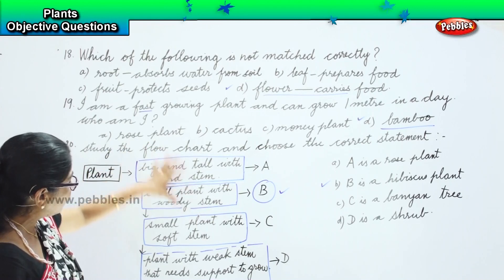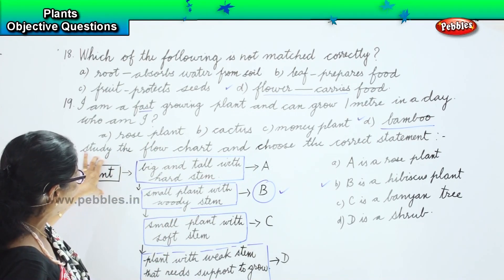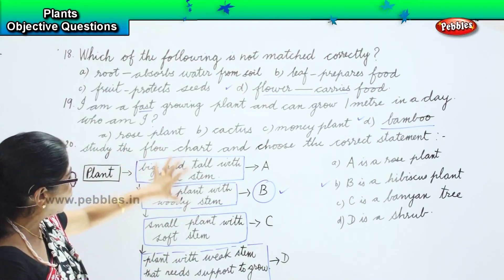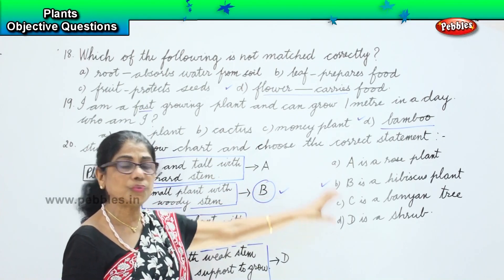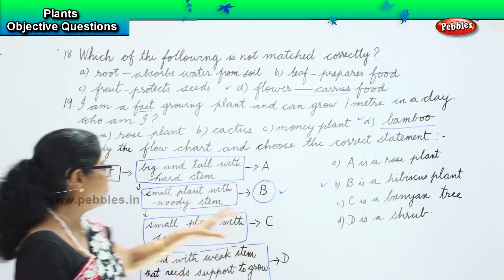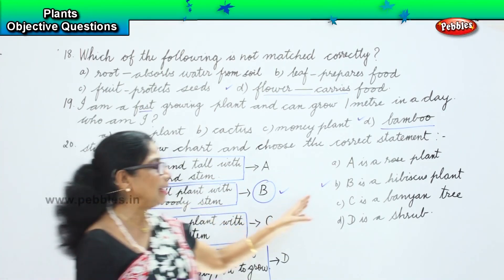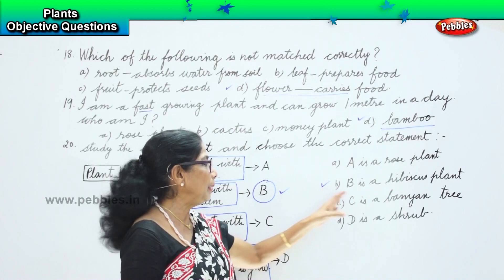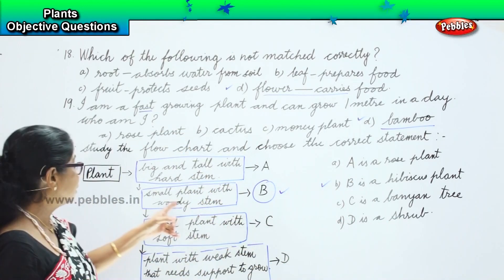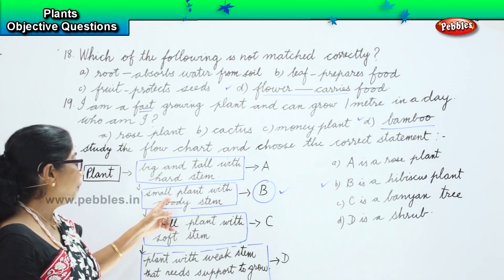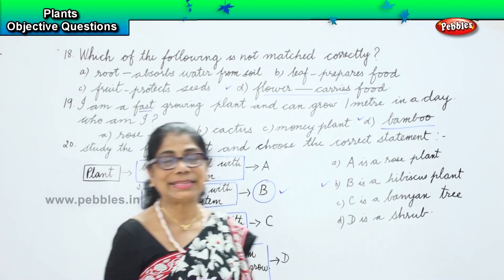The 20th one: we have a flowchart regarding plants. We have four statements and they are asking us to choose the correct statement. B is the correct statement. B is a hibiscus plant — hibiscus plant is a small plant with woody stem.